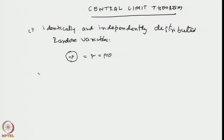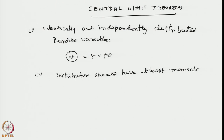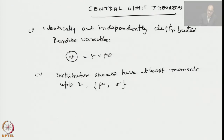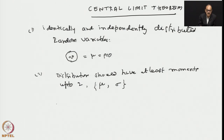The second concept is that the distribution in question must have at least a mean — that is, the distribution should have finite moments up to at least order 2, meaning it must have a mean and a standard deviation. One might wonder why such a restriction has to be made, since once there is a distribution there would always be a mean and a standard deviation — but that is not really true. In some contexts there are distributions which are normalized, the area under the curve could be 1, but their mean may not exist.